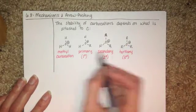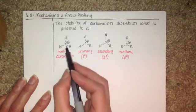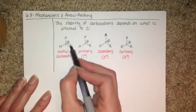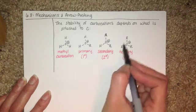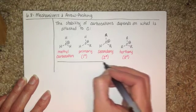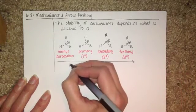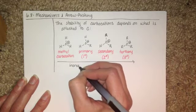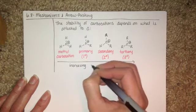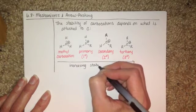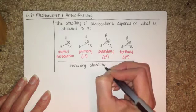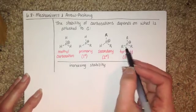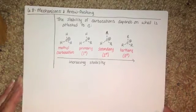What we find for these four different types of carbocations is that as you increase the number of alkyl groups on the carbon, you also increase stability of the carbocation. So the more alkyl groups you have on the positively charged carbon, the more stable the carbocation will be.